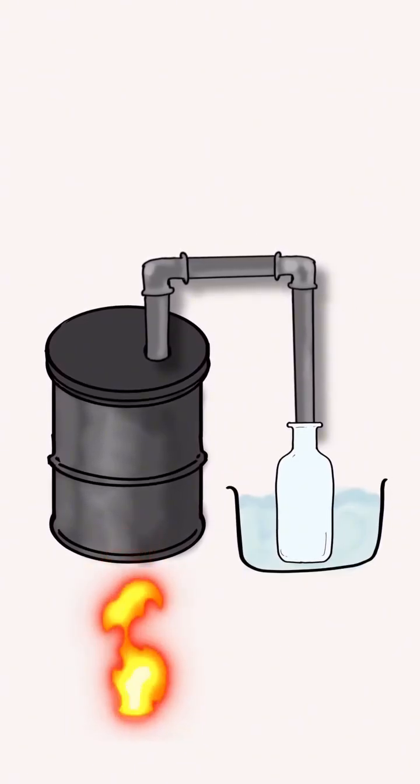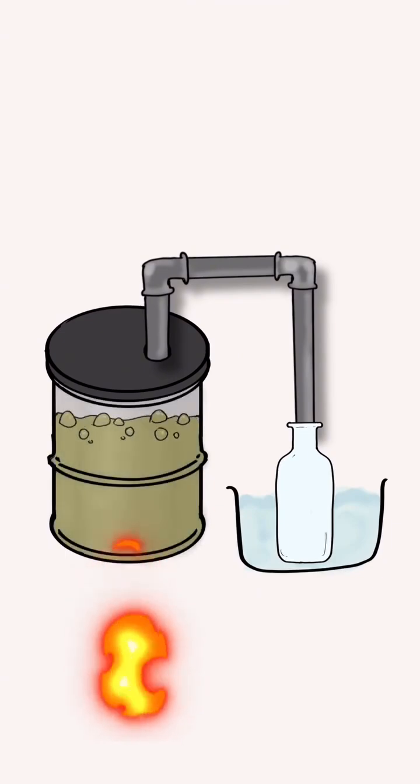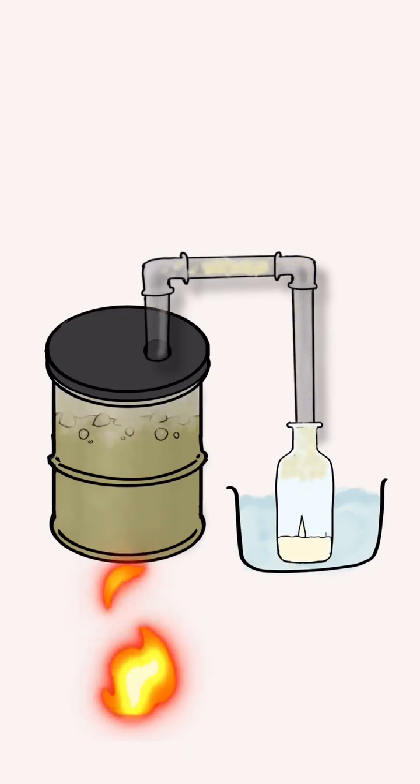Heat it gently over your fire. Alcohol boils at a lower temperature than water, so it turns into vapor first, travels through the pipe, and condenses back into liquid in your container.